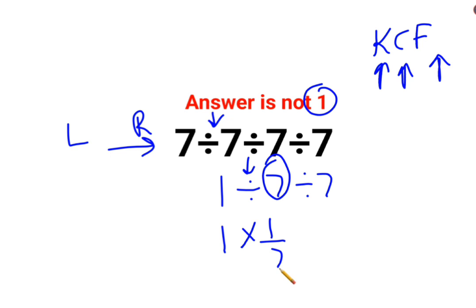is one upon seven. Same thing here also, we'll change the division sign to multiplication, flip seven which is one upon seven. So the answer